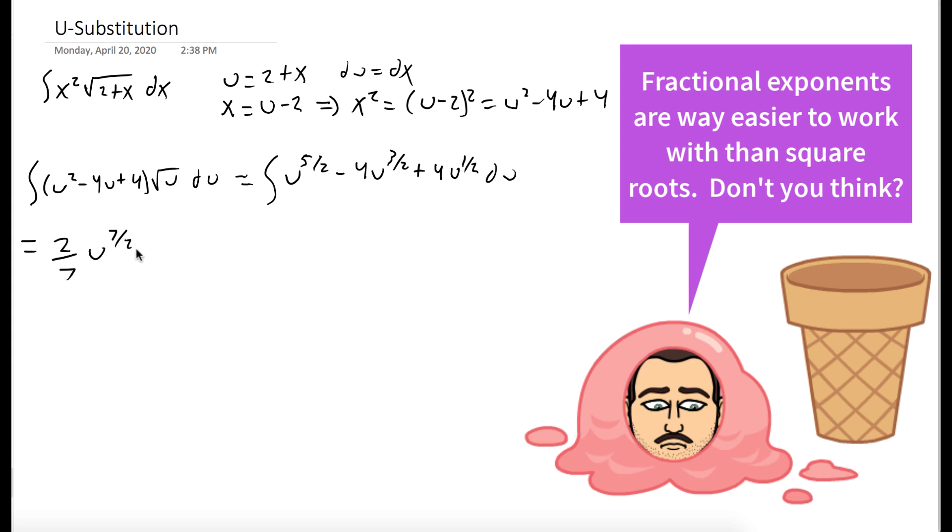So we increase the power by one and divide by the new power on each of these terms. So we get 2 sevenths u to the 7 halves minus 8 fifths u to the 5 halves plus 8 thirds u to the 3 halves plus c of course. Got to remember the plus c.